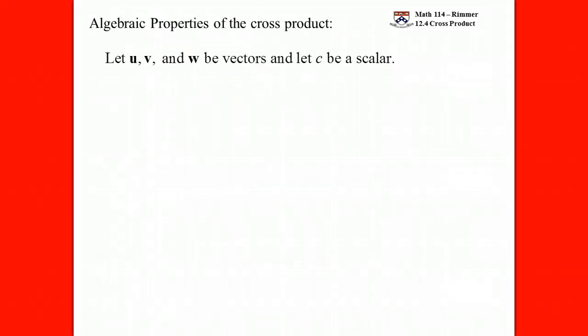Let's talk about some of the properties. Just like we had last time, let's take three vectors u, v, and w, and a scalar c. This time the order matters. If you do u cross v and then the other order, v cross u, you'll still get a vector that's orthogonal to both of them, but it will point in the opposite direction. So the order matters now — it didn't for the dot product, but it does for the cross product. The cross product is not commutative.